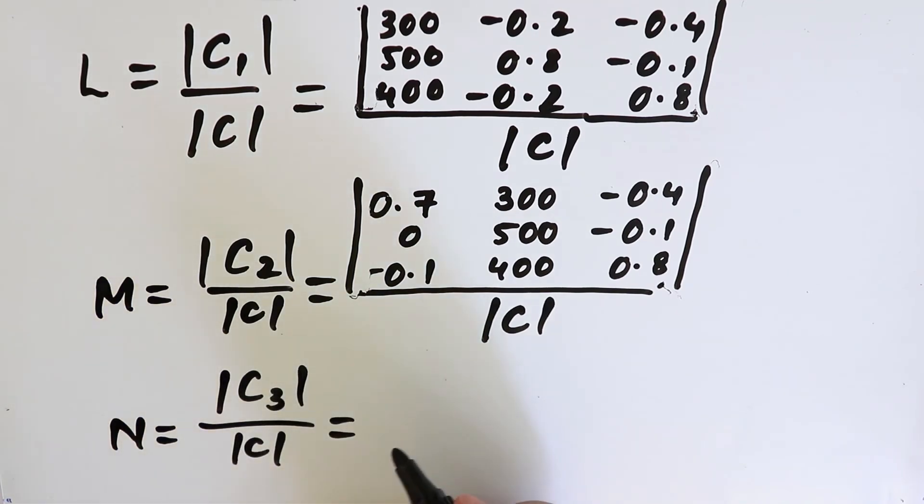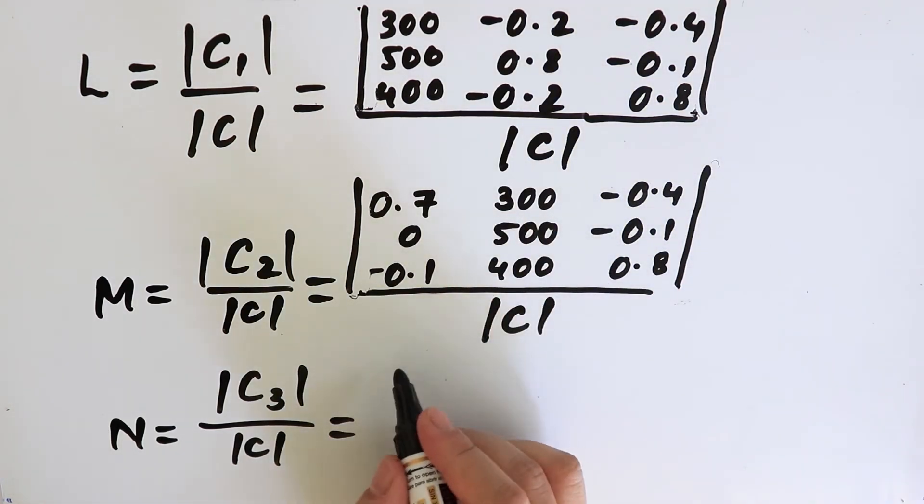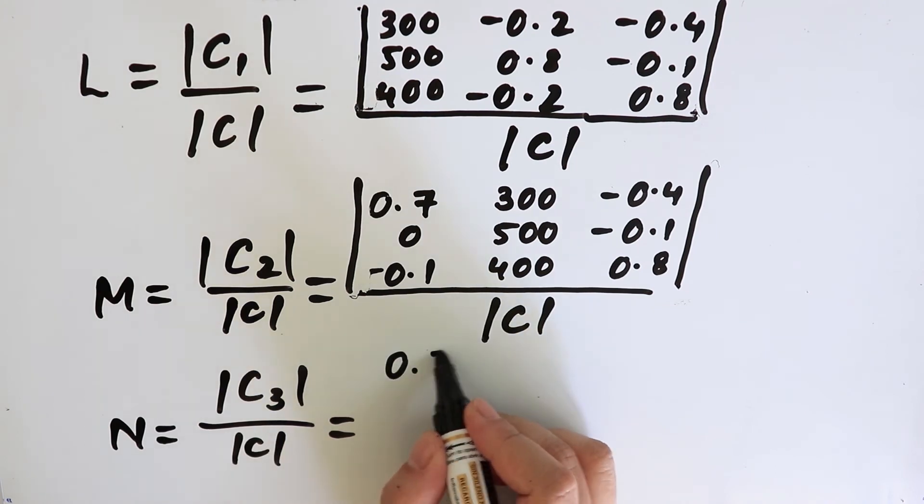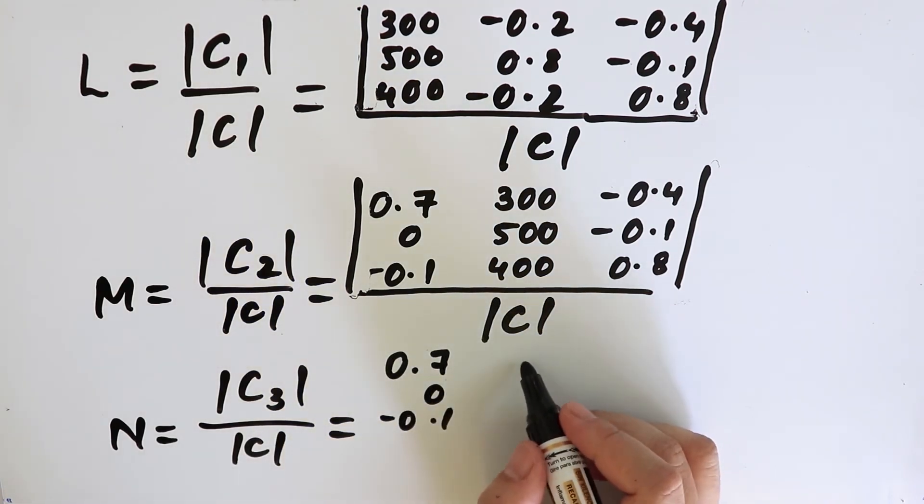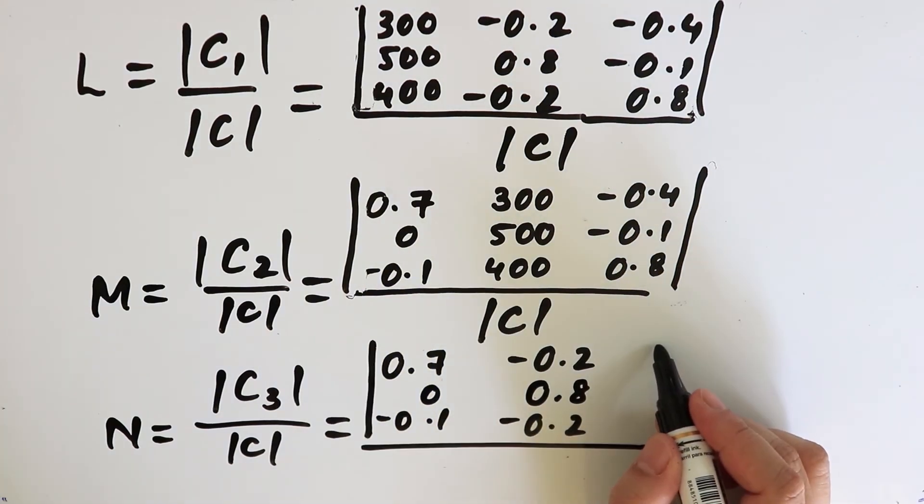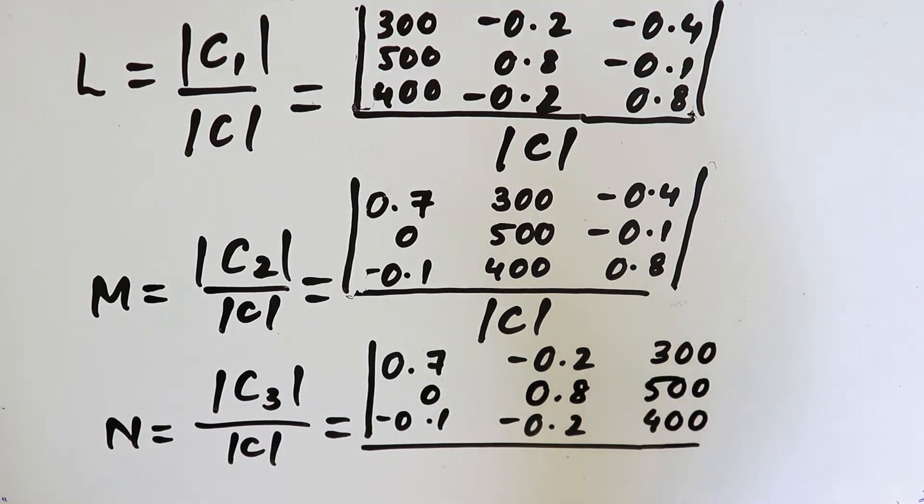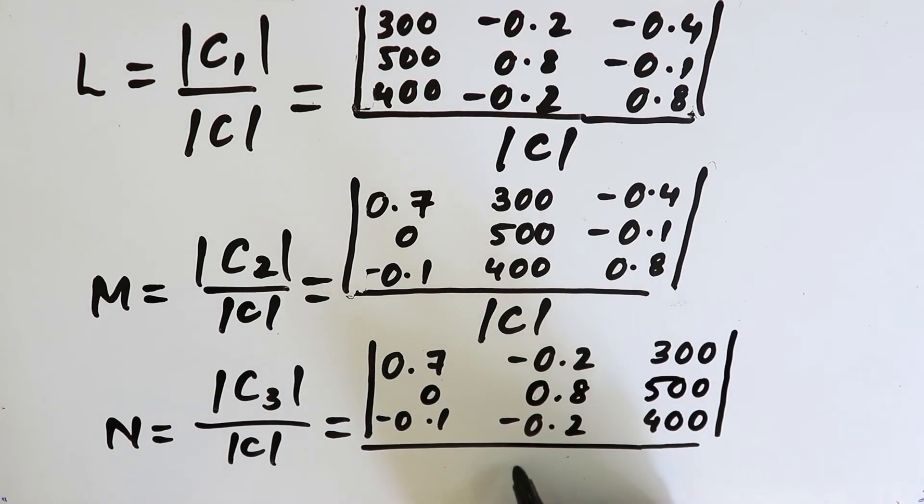N will be equal to determinant of C3 divided by C. In this case, the third column will be replaced with the values of the final demand. So we have 0.7, 0, minus 0.1, minus 0.2, 0.8, minus 0.2, and 300, 500, 400 divided by determinant of C.